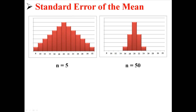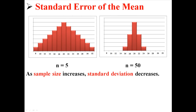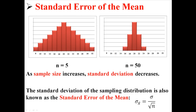Before I finish up, I also want to talk about the standard error of the mean. Here I have two distributions — one with sample sizes of 5 and one with sample sizes of 50. To be clear, these are sampling distributions of means. In these distributions, as sample size increases, standard deviation decreases. As your sample size gets bigger, it gets closer to the actual mean, so there will be less dispersion and a smaller standard deviation. The standard deviation of the sampling distribution is also known as the standard error of the mean — it's not necessarily an error or mistake, just the standard deviation of a sampling distribution of means. The formula is: the population standard deviation divided by the square root of your sample size.